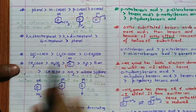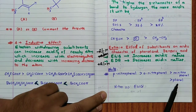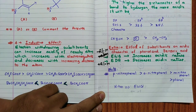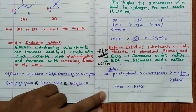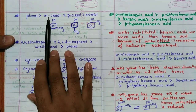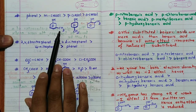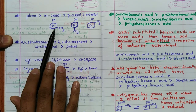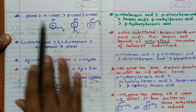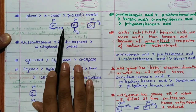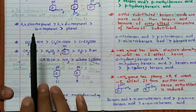Looking at nitrophenol isomers: para-nitrophenol is more acidic than ortho-nitrophenol, more than meta-nitrophenol, more than phenol — because the nitro group is electron-withdrawing, and its withdrawing capacity is greatest at the para position, then ortho, then meta. For cresol (methylphenol), phenol is more acidic than meta-cresol, which is more acidic than para-cresol, more than ortho-cresol, because the CH₃ group is electron-donating and its donating effect is least at the meta position. As electron-withdrawing groups increase in number, acidity increases: 2,4,6-trinitrophenol > 2,4-dinitrophenol > 4-nitrophenol > phenol.